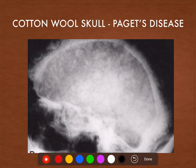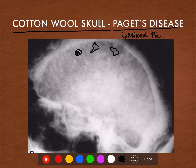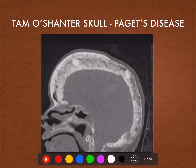In the next skull, we see multiple white sclerotic lesions as well as lucent areas interspersed within these sclerotic lesions. This skull has both sclerotic and lytic lesions and is known as the cotton wool skull, which is characteristic of the mixed phase of Paget's disease — that is, both lytic and sclerotic lesions.